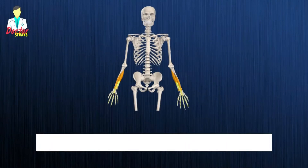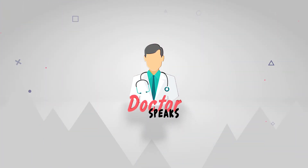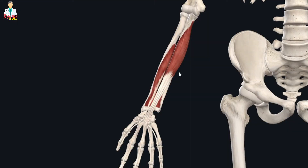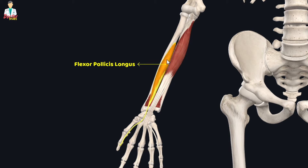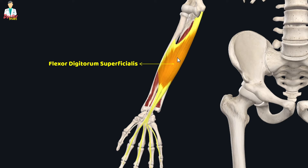Hello everyone, welcome back. In this tutorial, we are going to study the anatomy of the deep muscles of the anterior forearm. There are three deep muscles in the anterior forearm: the flexor digitorum profundus, flexor pollicis longus, and the pronator quadratus muscle. These three muscles lie deep to the flexor digitorum superficialis muscle of the intermediate forearm. We will study the anatomy of each of these three deep muscles individually.